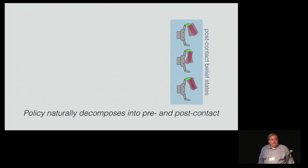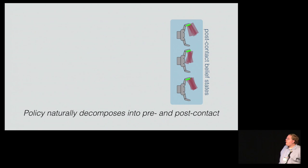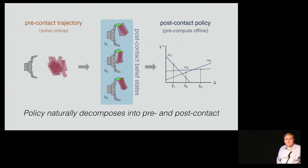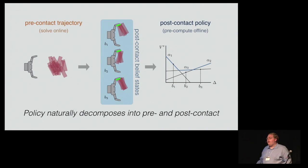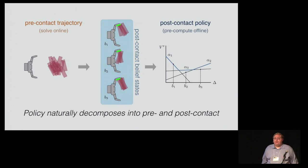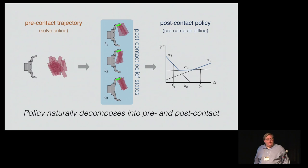This is true fundamentally because contact sensors measure contact on a lower-dimensional manifold in the state space, which means that everything that's not on that lower-dimensional manifold is very low probability. So we can use this structure to decompose the problem into two stages that are loosely coupled: a pre-contact stage which tries to make initial contact with the object, and a post-contact stage that's a complicated closed-loop policy which achieves the final grasp. We can pre-compute this post-contact stage and run an efficient search to solve the pre-contact stage online.